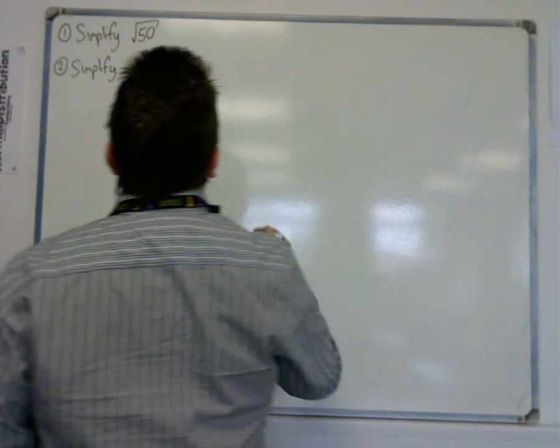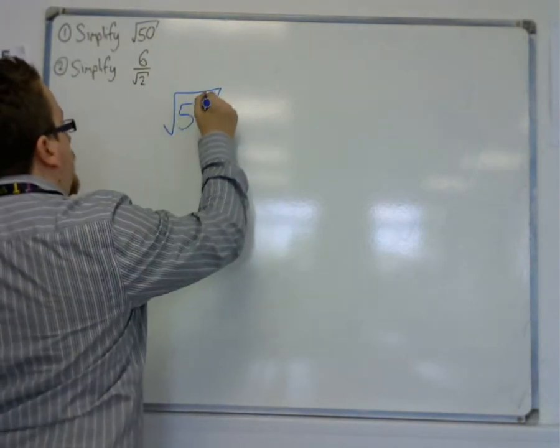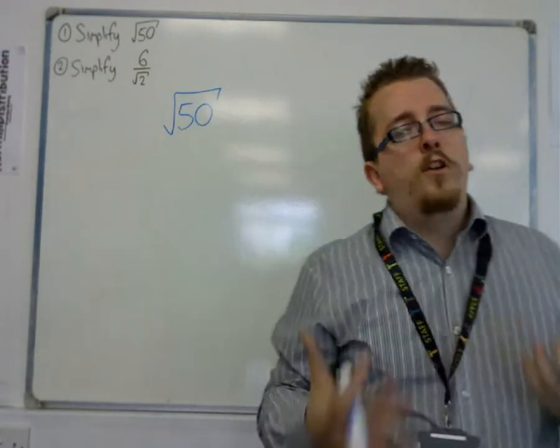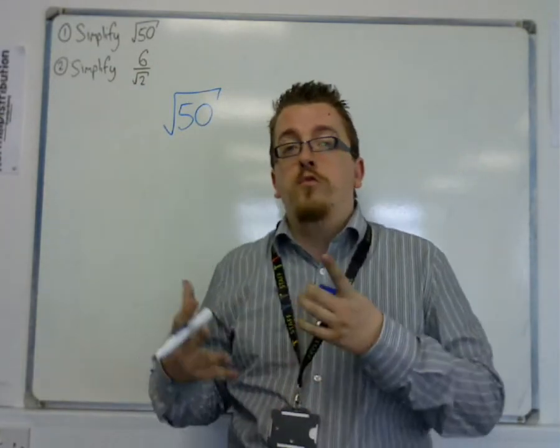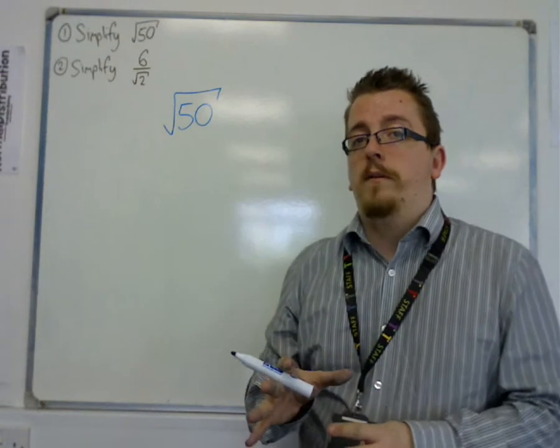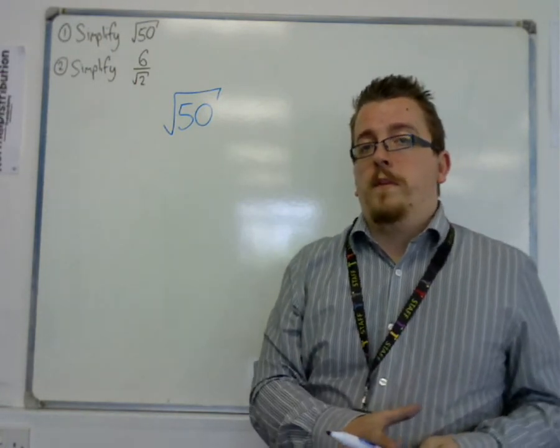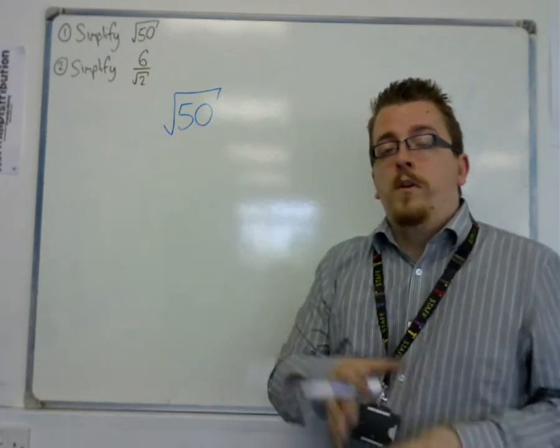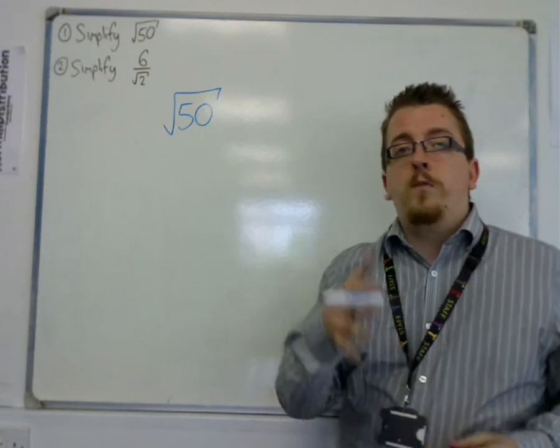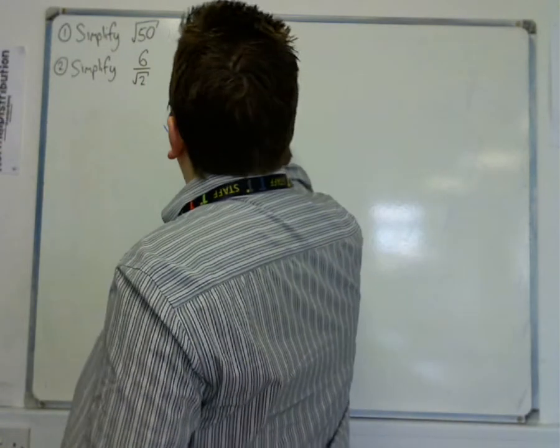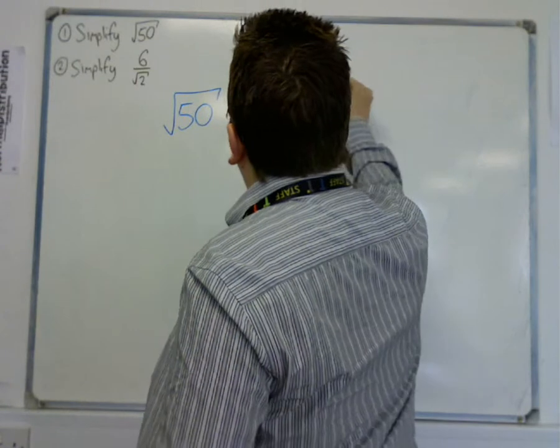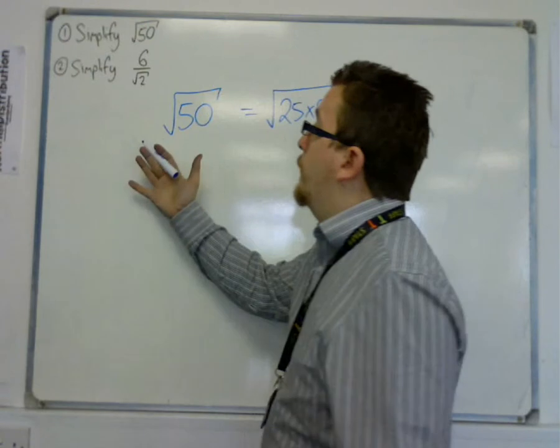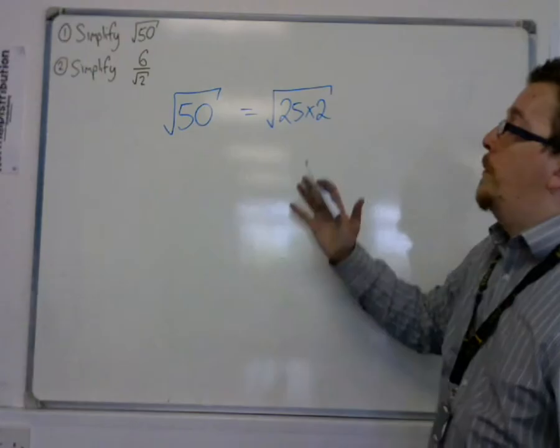Square root of 50, root 50. What you need to do is you need to look at 50 and think, which square number goes into 50? It's always about the square numbers because we're dealing with square roots. So which square number goes into 50? Well, that would be 25. So we could write 50 as 25 times 2. So we could write square root of 50 as the square root of 25 times 2.